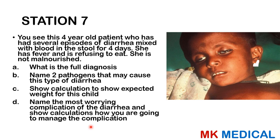Station 7. A four-year-old patient has had several episodes of diarrhea mixed with blood in the stool for four days. She has fever and is refusing to eat. She is not malnourished — that is the key term. What is your full diagnosis? Name two pathogens that may cause this type of diarrhea. Show a calculation for the expected weight for age. Name the most worrying complication of the diarrhea and show calculations for how you're going to manage the complication.